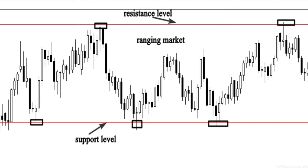If you can differentiate between ranging markets and trending markets, you will know how to use price action strategies correctly. The first way to trade a ranging market is by waiting for price to approach the support and resistance level — you can buy at the key support level and sell at the resistance level. As you see on the chart, the market is moving horizontally; the best buying opportunity occurs at the support level and the best selling opportunity at the resistance level.